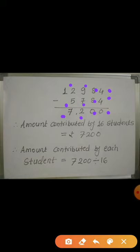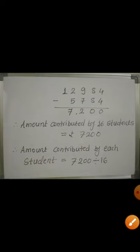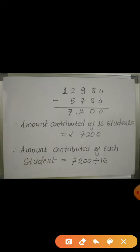So Rs. 7,200 is the amount contributed by all 16 students. But what we actually need to find is the amount contributed by each student. Students, always remember — whenever we have to find out the quantity for 1, we divide. We know the amount contributed by 16 students is Rs. 7,200, and we know the number of students. So amount contributed by each student = 7,200 divided by 16.